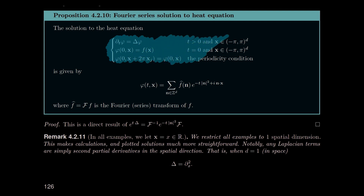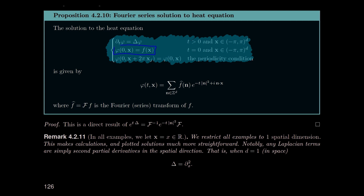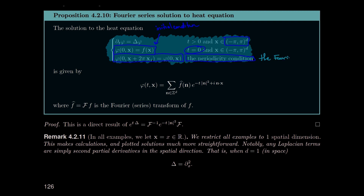The first row is the definition of the heat equation with heat conductivity one. The second equation is an initial condition — the boundary at time equal to zero, describing the initial distribution of heat over space. The third condition is the periodicity condition, which tells us the Fourier series can apply — we're working over the d-torus.